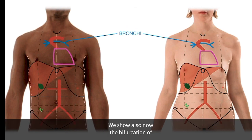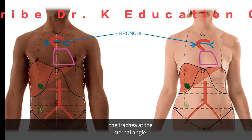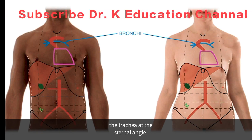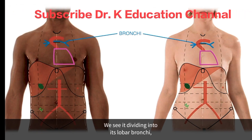We show also now the bifurcation of the trachea at the sternal angle. We see it dividing into its lobar bronchi — three on the right and two on the left.